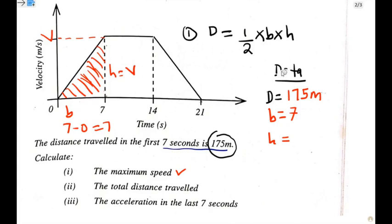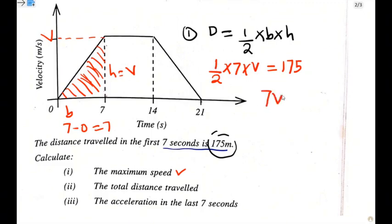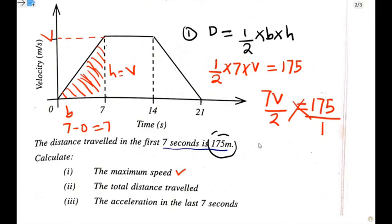We can now substitute in our formula. Where we have D we put 175, where we have B we put 7, and where we have height we put V representing maximum speed. So we write: one half times 7 times V equals 175. This gives us 7V over 2 equals 175. Cross-multiplying, we get 7V equals 2 times 175.